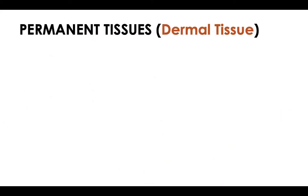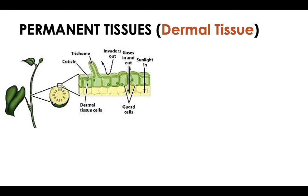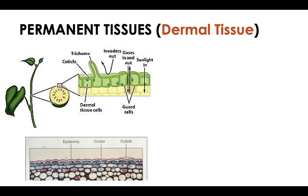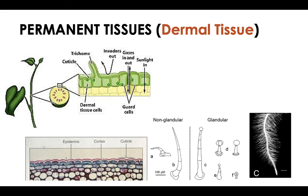Dermal tissue is the outer protective covering of the primary plant body — roots, stems, leaves, flowers, fruits, and seeds. The epidermis is part of the dermal tissue, along with protuberances like trichomes and stomata. The function of dermal tissue is protection, regulation, deterring herbivory, and transpiration. For woody plants, the epidermis is soon replaced by a thick layer of periderm upon reaching maturity.